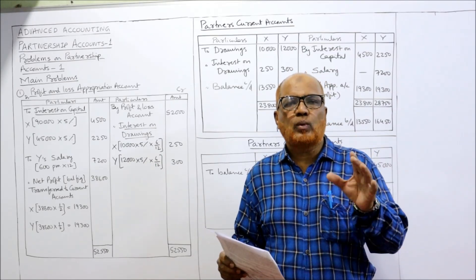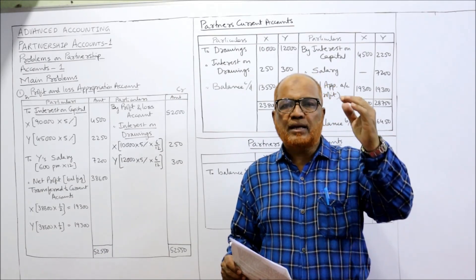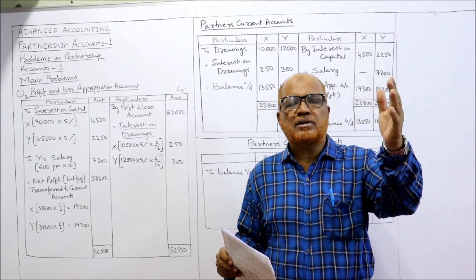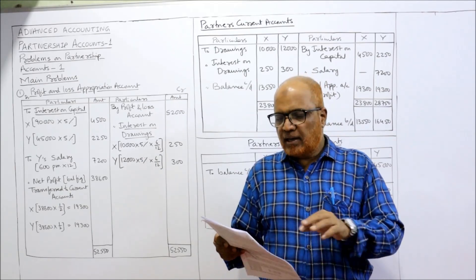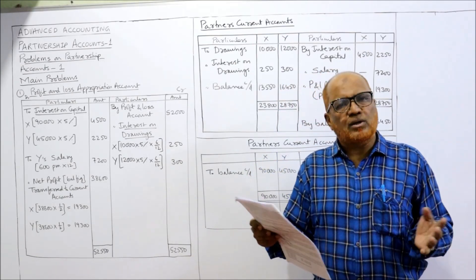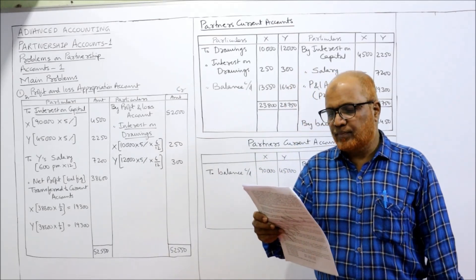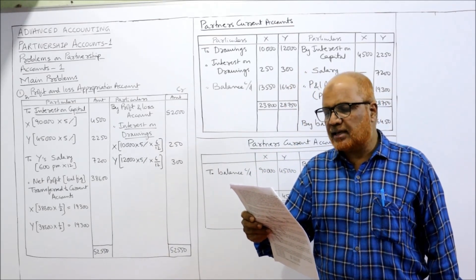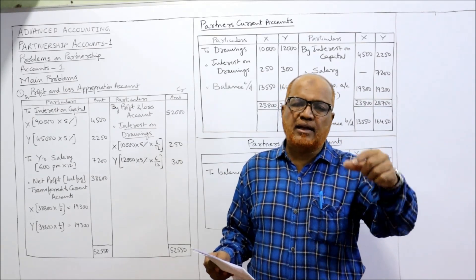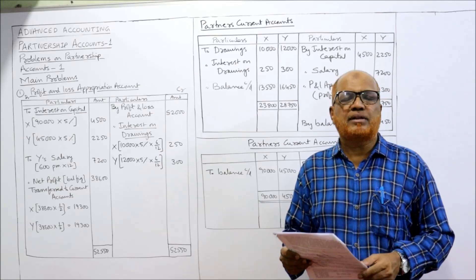The capitals are assumed to be fixed. When capitals are fixed, all adjustments are done in the current account. Two accounts are opened for every partner: one capital account and one current account. The capital account remains the same — whatever the beginning capital is, it stays the same at year end, like X's 90,000 and Y's 45,000. All adjustments go into a new account called the current account. We are required to prepare the profit and loss appropriation account and the capital accounts, which also means preparing the current account.